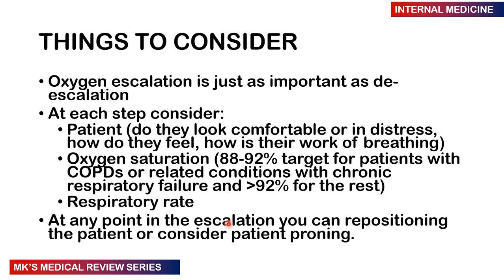Your target saturation is 88% to 92% for those with COPD and related conditions with chronic respiratory failure, because you don't want to keep increasing carbon dioxide concentration in their body — they need some hypoxia to drive their respiratory centers. For individuals without these conditions, keep saturations greater than 92%. If someone with COPD is at 90%, you won't rush to give oxygen; you'd start oxygen if they drop below 88%. Also remember that at any point you may reposition the patient, which may help improve saturations.